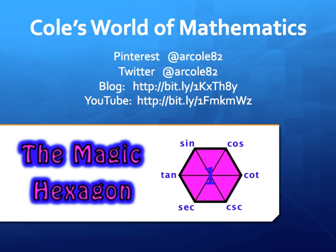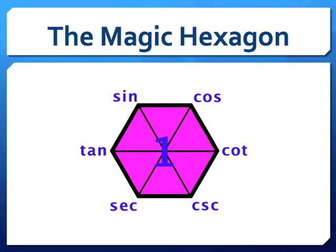Today we're going to take a look at a magic hexagon, and this magic hexagon is going to help us in generating all of our trig identities. We're going to place a one in the center of the hexagon, and then we will place the six trig functions around the outside of the hexagon as shown in the picture.